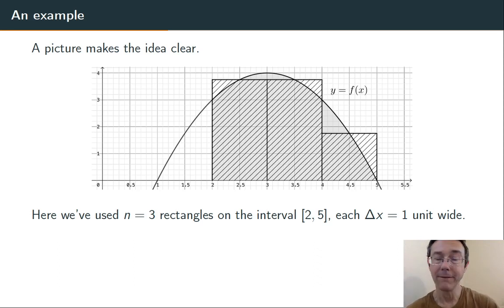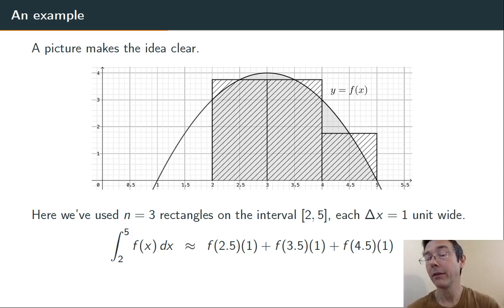So for example, on that first sub-interval from 2 to 3, if you look at that midpoint, 2.5, and then go up to the graph, you'll see that's where I've drawn the height of the rectangle. And then I'm going to approximate the definite integral just by writing the sum of the rectangles: width times height, plus width times height, plus width times height. So in this case, f(2.5) times 1 plus f(3.5) times 1 plus f(4.5) times 1.